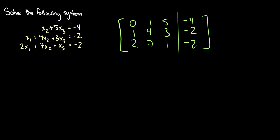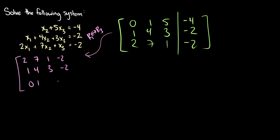We have an algorithm for solving these — we won't go over it fully now, but here's the general idea. First, we want a number in the top left, so we'll interchange some rows. We're going to swap row 1 and row 3, giving us: 2, 7, 1, negative 2 / 1, 4, 3, negative 2 / 0, 1, 5, negative 4.